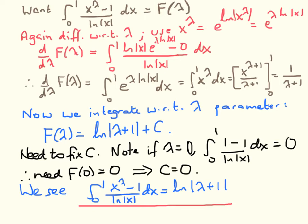It's not immediately obvious how the logarithm might be eliminated. But if we differentiate with respect to λ, then through the Leibniz integral rule we pull the derivative through the integral sign. We want to differentiate x^λ with respect to λ. To do that, we write x^λ as e^(log x^λ), and using log rules we pull λ out in front, so x^λ equals e^(λ log x), which is straightforward to differentiate with respect to λ.